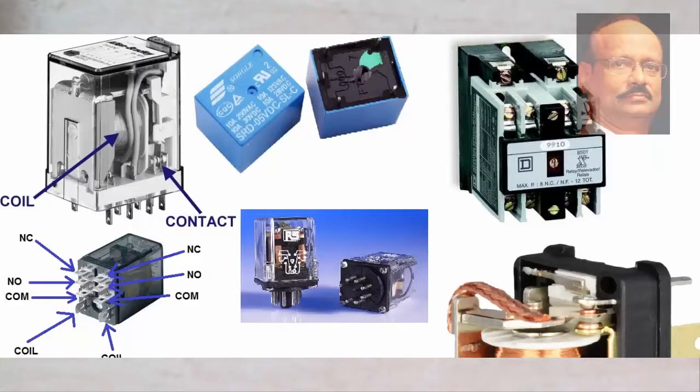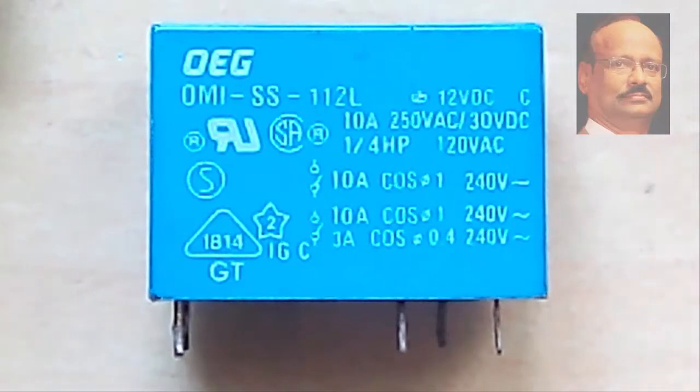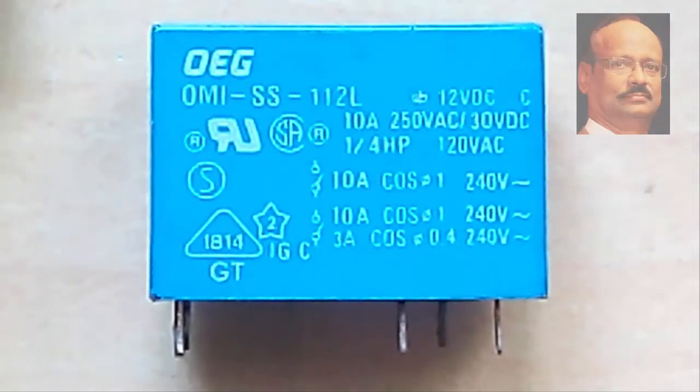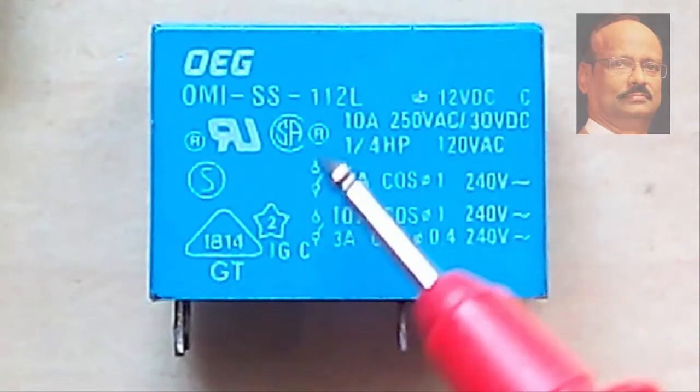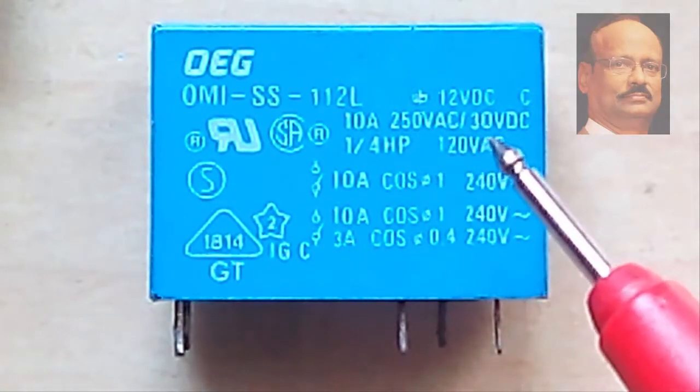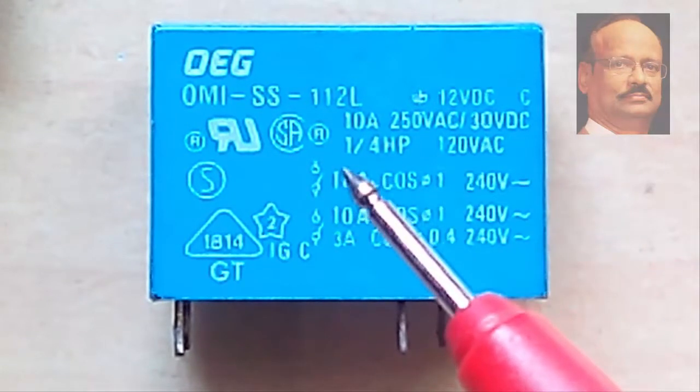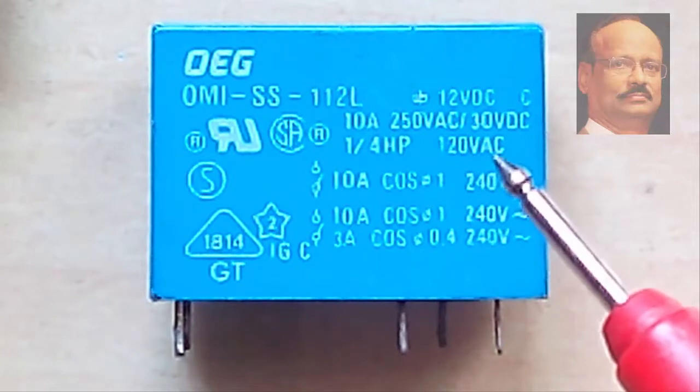There are relays of different types. For example, this type where we find this is a 12 volt relay and the coil voltage is 12 volt, and it can handle 10 ampere at 250 volt AC or 30 volt DC. Usually it can take about 120 volt DC.